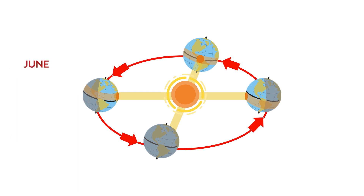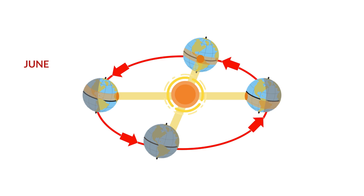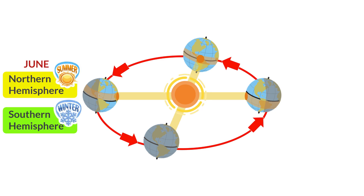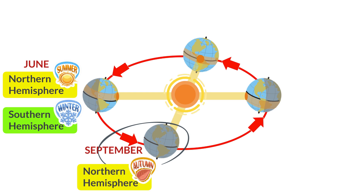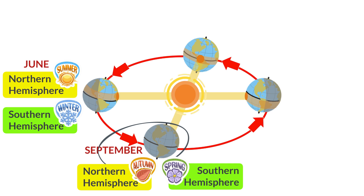From June to August, the Sun shines directly on the northern hemisphere and indirectly on the southern hemisphere. It is now summer north of the equator and winter south of the equator. From September to November, the Sun shines equally on the northern and southern hemispheres, and days have equal amounts of daylight and darkness. It is now autumn season in the northern hemisphere and spring season in the southern hemisphere.